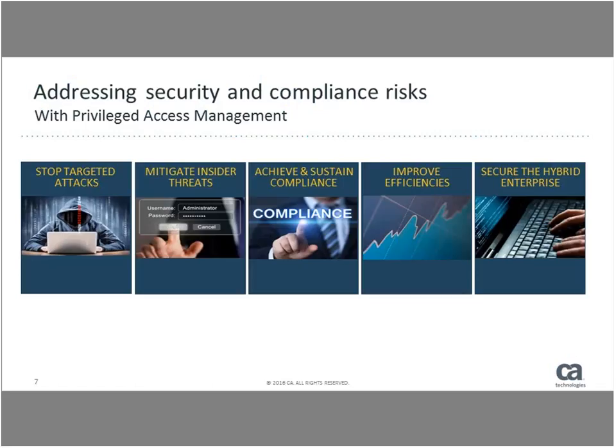The business goals for implementing a risk reduction strategy around privileged accounts involve five related things. One is stopping targeted attacks — if attackers are using privileged accounts as part of their attack, it behooves you to put in a countermeasure to manage privileged access. The second is mitigating insider threat. Administrators need the authority to do their job, which is to keep systems up, running, and optimized, but you need to balance that with limiting what they can do so they don't go beyond their job description.